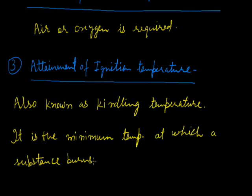A substance begins to burn only after it has attained a certain minimum temperature, or ignition temperature. That is the reason why a piece of wood has to be heated for some time before it catches fire. Substances that have a low ignition temperature catch fire easily. Such substances are known as inflammable substances. Examples of inflammable substances are LPG, petrol, and alcohol.